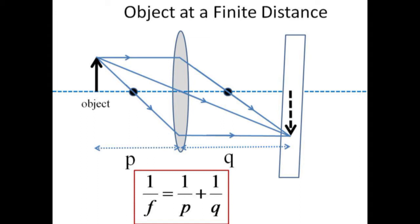Generally, this inverse relationship implies that for objects beyond the near focal point, the smaller p becomes, the larger q becomes.